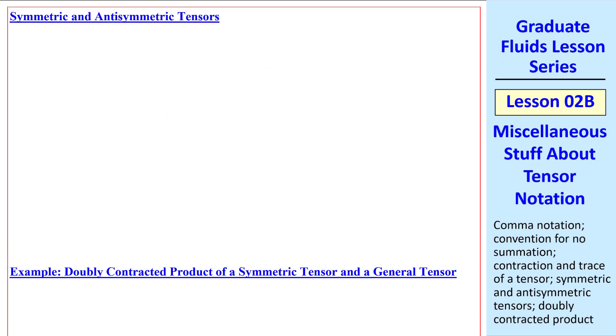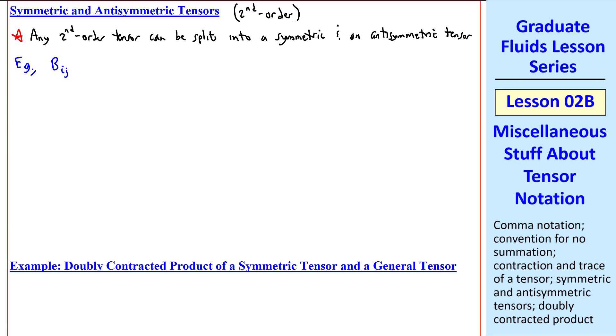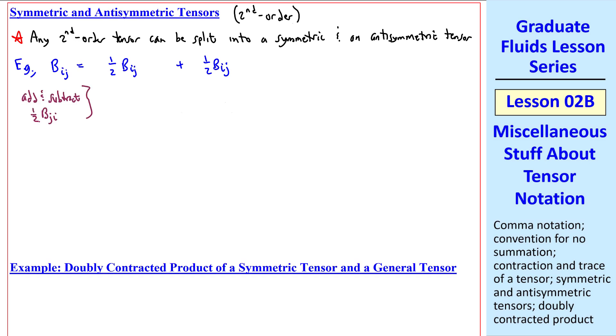Now consider symmetric and antisymmetric tensors, and we'll limit our discussion to second-order tensors. It turns out that any second-order tensor can be split into a symmetric and an antisymmetric tensor. For example, take some general tensor, bij. I split it into one-half bij plus one-half bij.